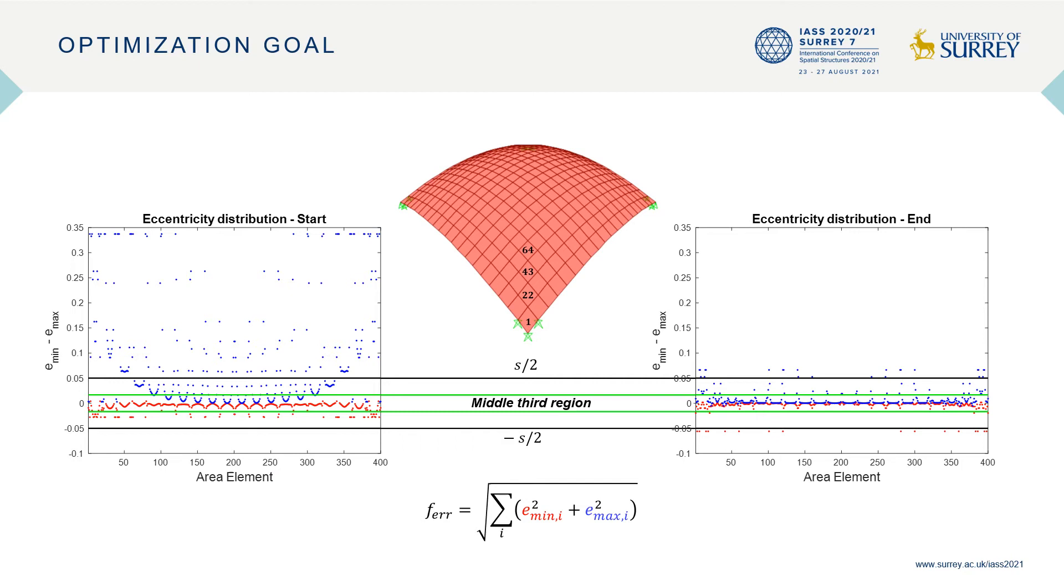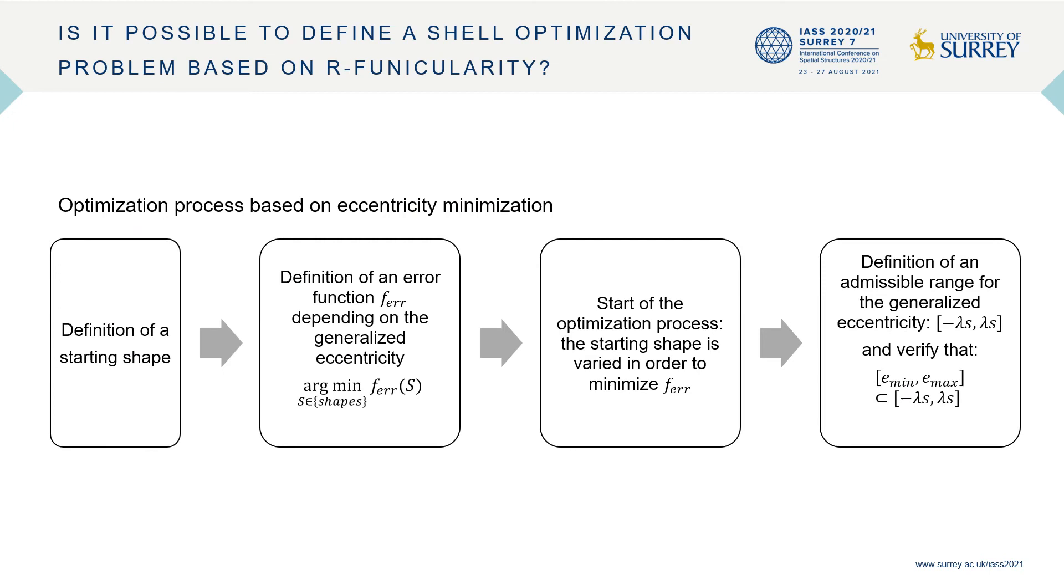The left picture shows the eccentricity extrema scattered distribution of a starting shape. These values go into the objective function, whose minimization generates a shape characterized by the eccentricity distribution shown in the right picture, where it can be noticed that the eccentricities are closer to zero and mostly inside the middle third region.